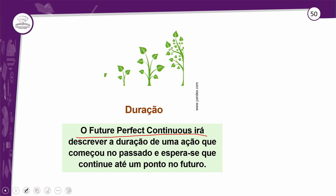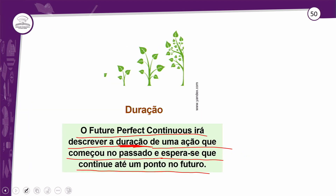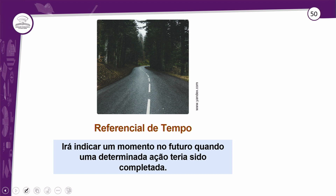'They will have been planning their trip for a year by the time they leave.' Eles estarão planejando a viagem deles por um ano quando eles partirem. Aqui já tem um exemplo que mostra o presente simples — 'they leave' — pois quando eu uso 'by the time', a frase seguinte fica no presente simples. A ideia é que eles vão partir no futuro. Quando eles partirem, a ação de planejamento terá durado por um ano.